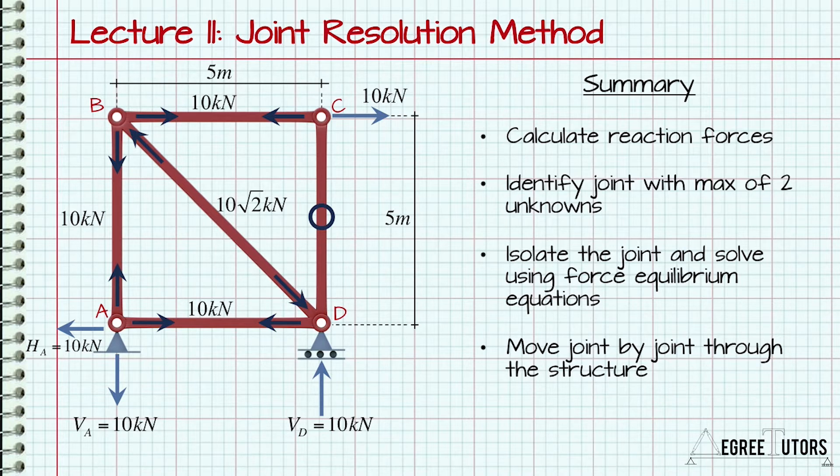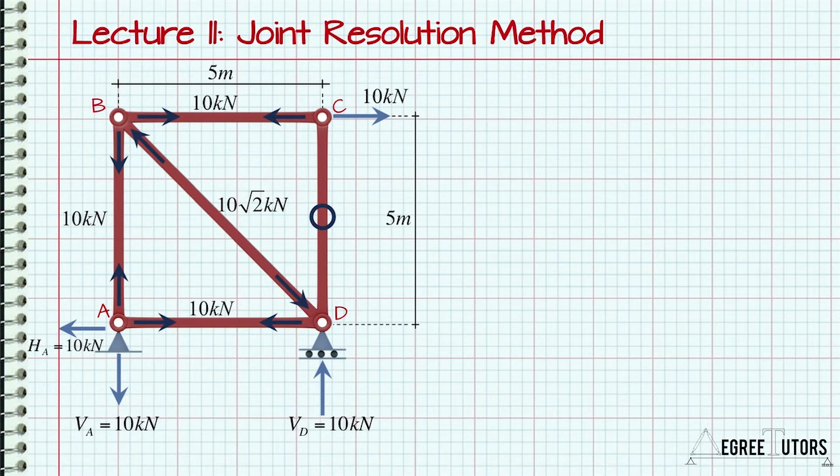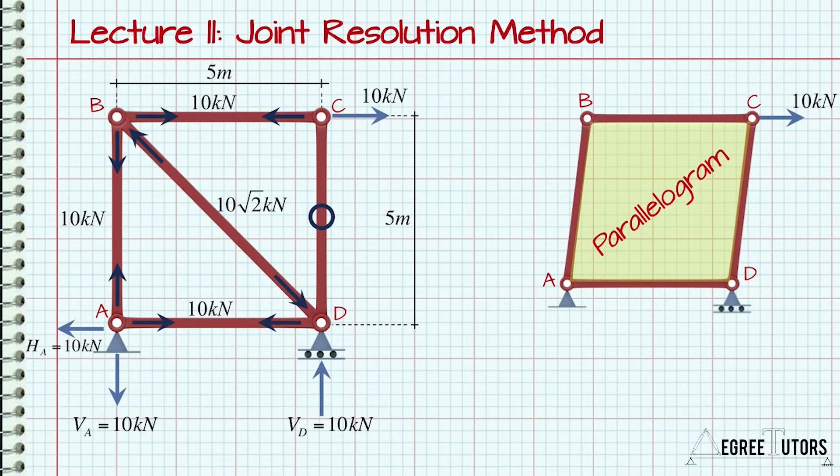It's important to take a step back when you've finished the solution and look to see if it makes sense to you. For example, our solution tells us that the diagonal member BD is in compression, so it's being compressed or squeezed under the influence or action of the externally applied load. This makes sense when we think what would happen to the structure if we removed BD. The structure would deform into a parallelogram shape and collapse as a mechanism with joints B and D moving towards each other. So member BD is the only thing stopping nodes B and D moving towards and meeting each other.